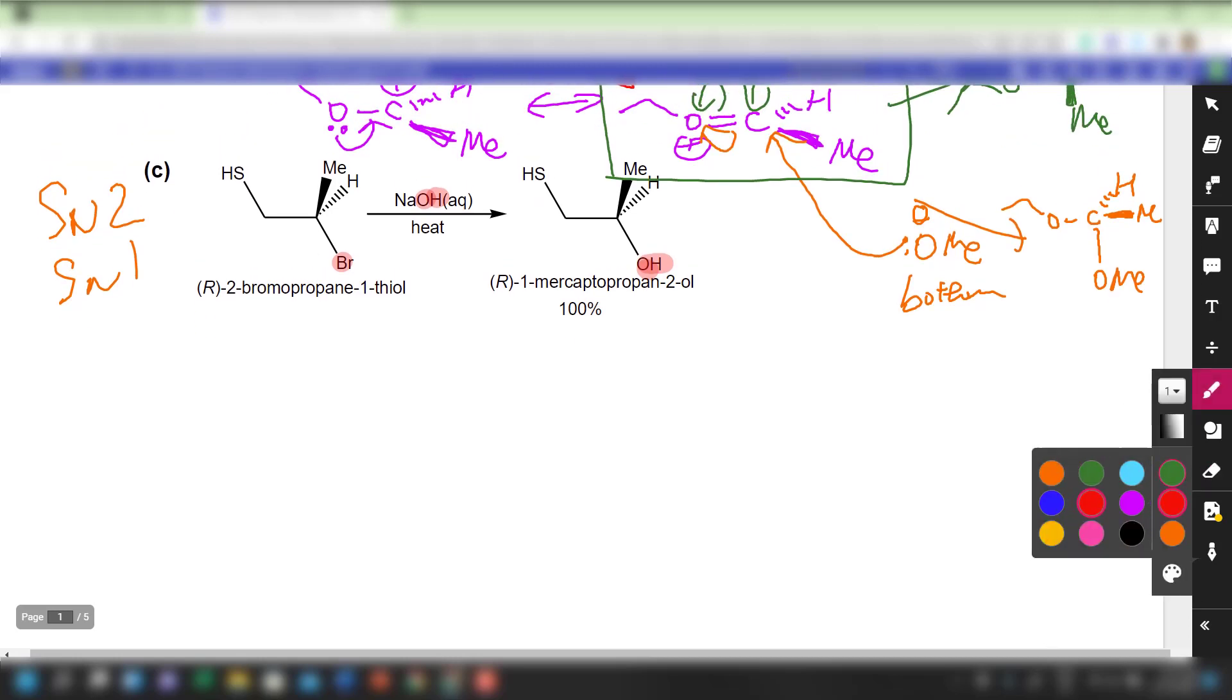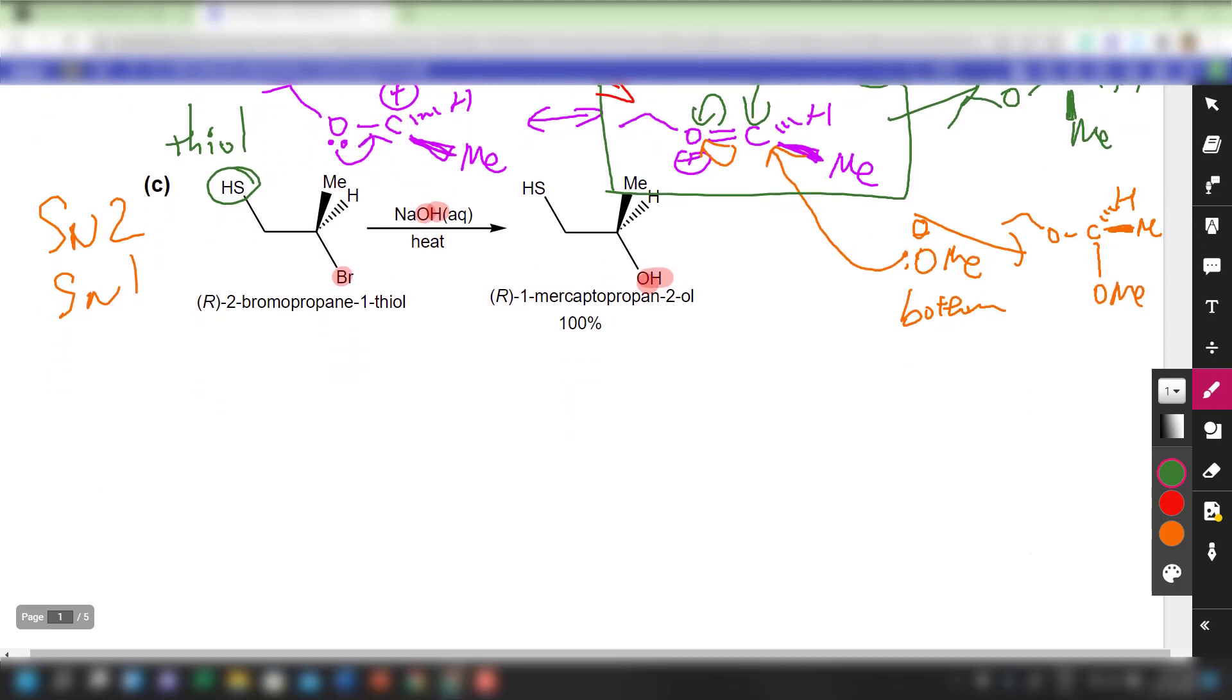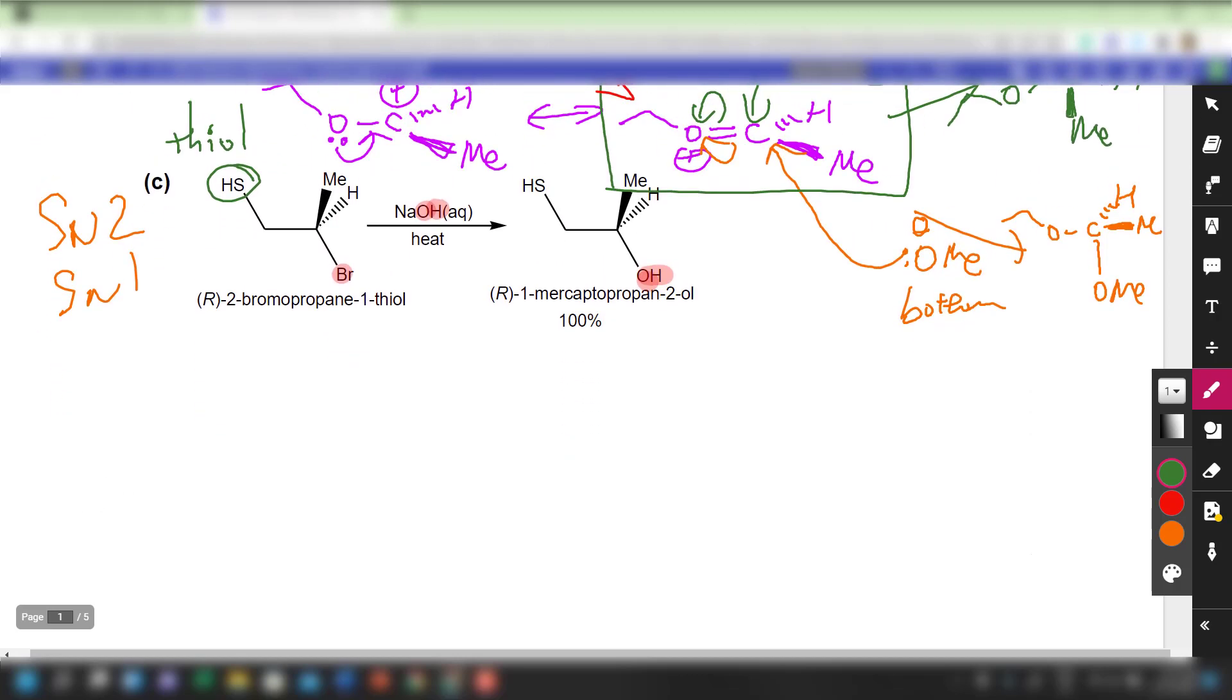Then you also notice that I have a unique group here, which is a thiol. So if you go check up on your thiol, you'll notice that the thiol group is pretty acidic. So in this case, if I have an OH-, the first thing that could probably happen to my thiol group is that it will be deprotonated. So the OH- will probably deprotonate my thiol first, to give me the thiolate. So the thiolate will now have a negative charge.